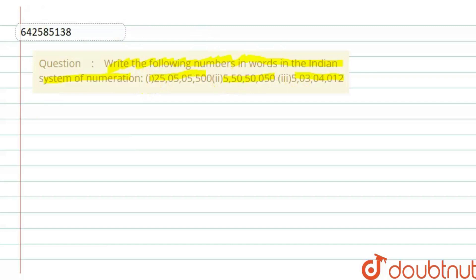Let's start with the first part of the question. It's 25,05,05,500 - already separated by commas. Now let's understand what is the Indian system of numeration. In this system, the numbers are written as ones, tens, hundreds, then there is a comma.